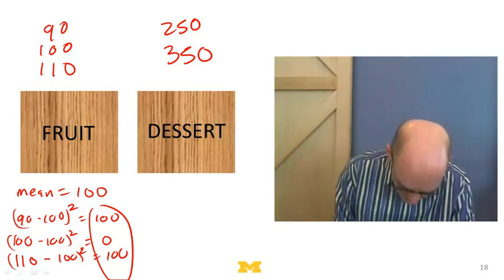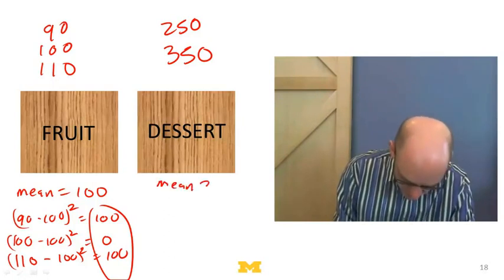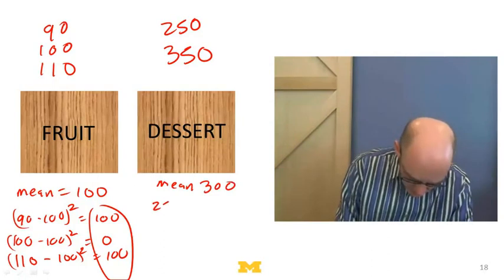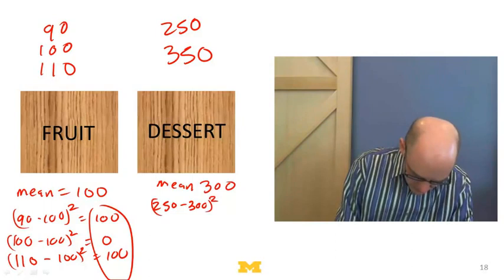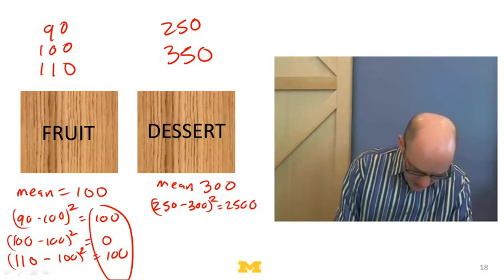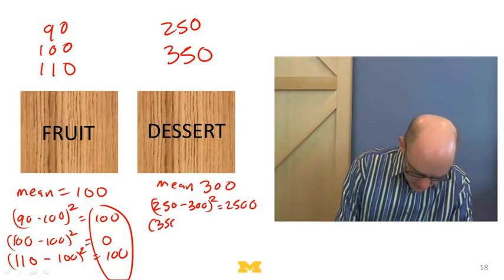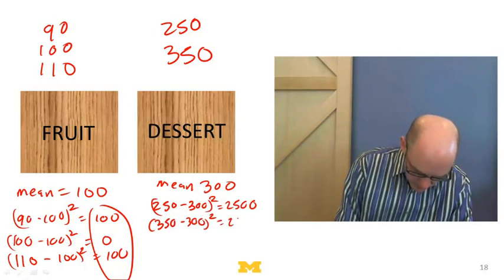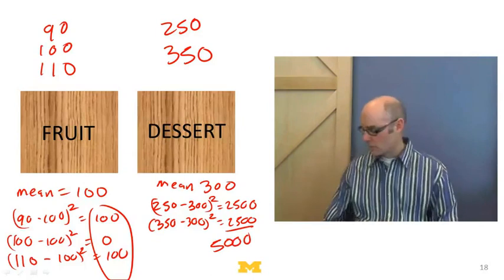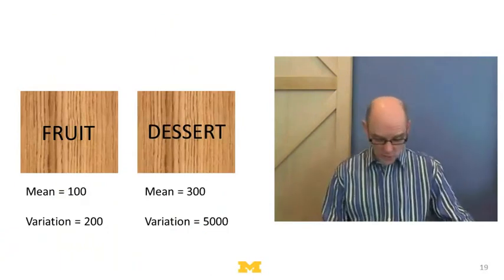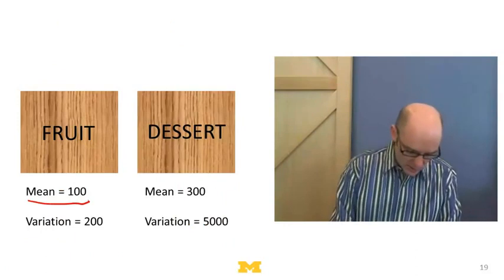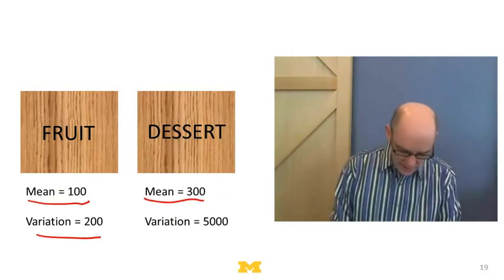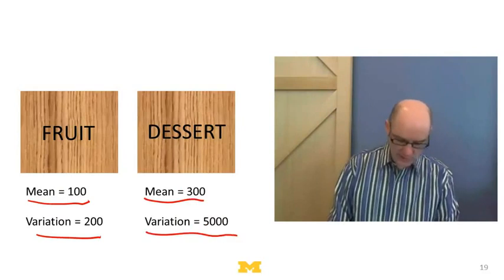And now if I go to this case, the mean is going to be 300 for the desserts. And what's the total variation? Well, for the cake, it's 250 minus 300, which is 50 squared, which is 2,500. And for the pie, it's 350 minus 300, which is also 50 squared, which is 2,500. So when I add those up, I get 5,000. So what I did is by creating two categories, a fruit category and a dessert category, I now have a mean in the fruit category of 100 and a variation of 200, and a mean in the dessert category of 300 and a variation of 5,000.